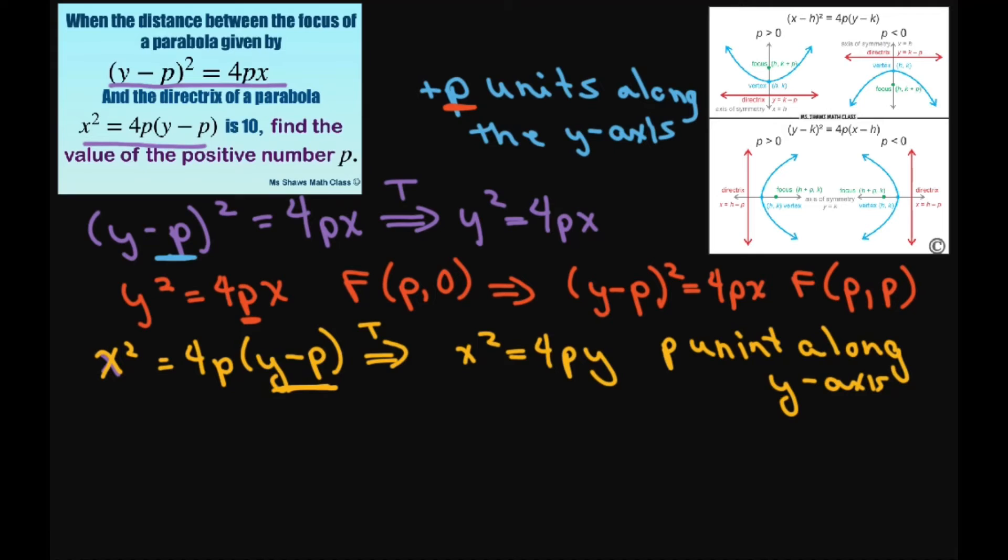Alright, now for x² = 4py. This has a focus at (0, p). Therefore, our x² = 4p(y-p) has a focus at... Since we're translating it, it's going to be zero and p and then we're going to add this p.